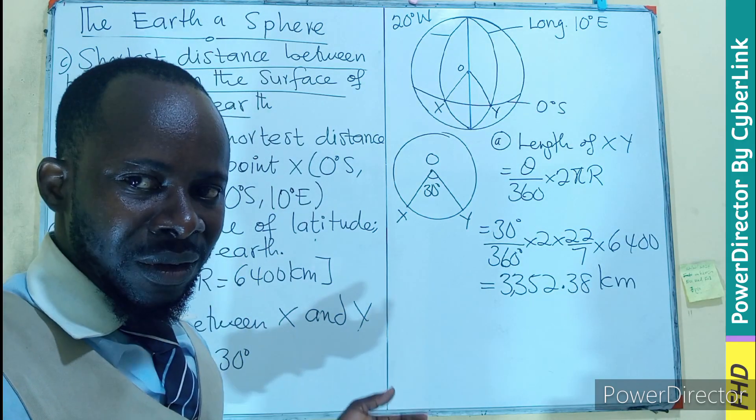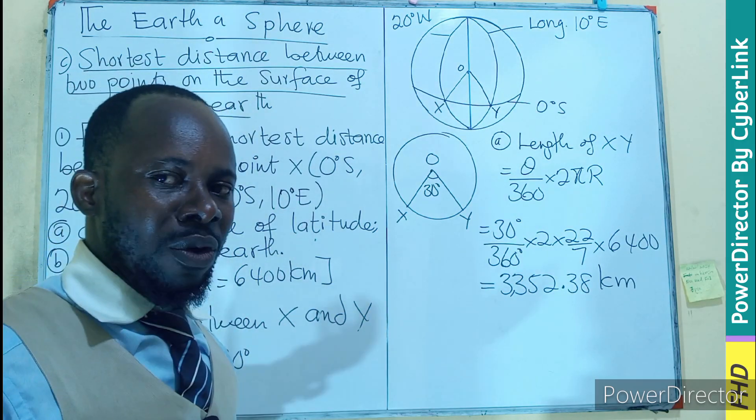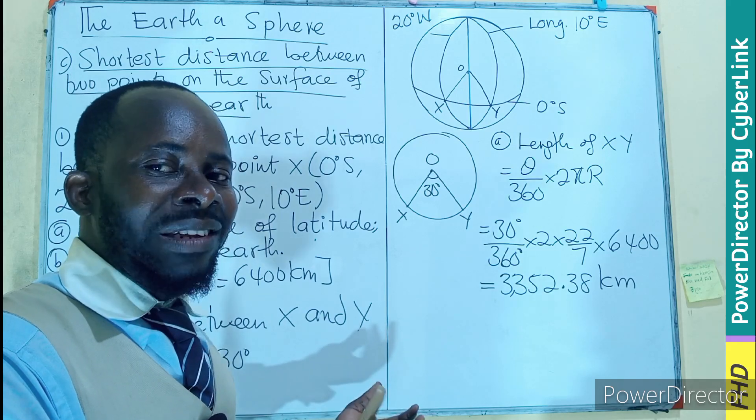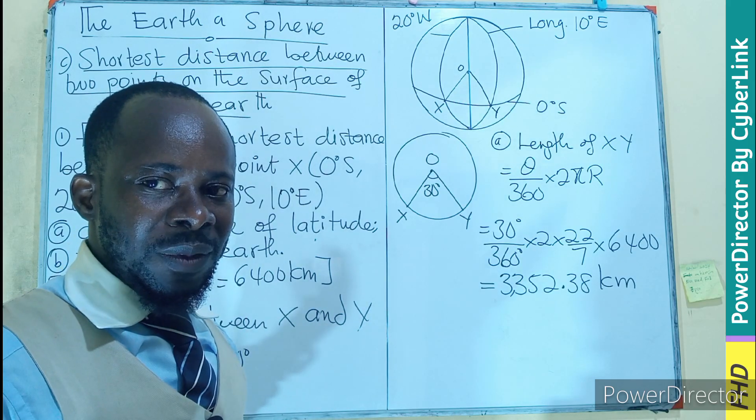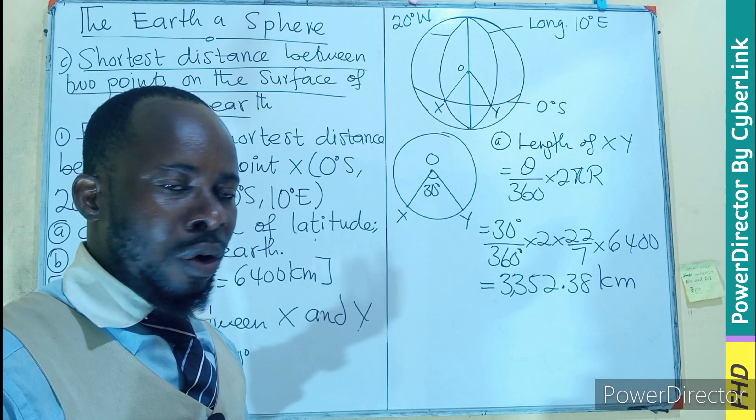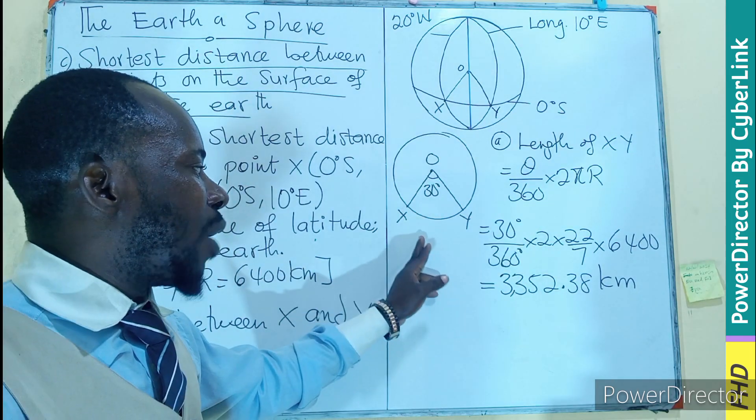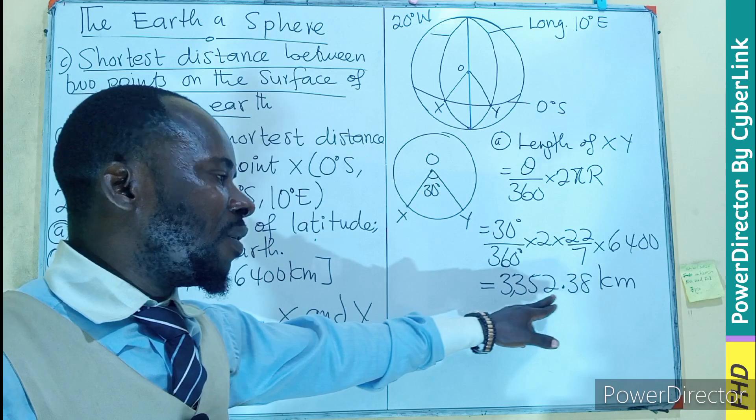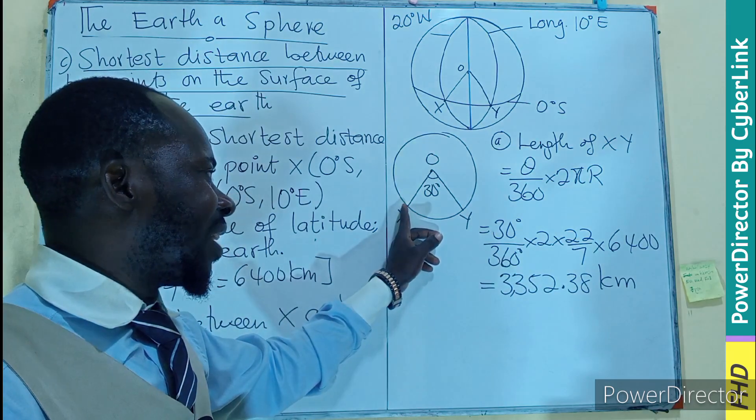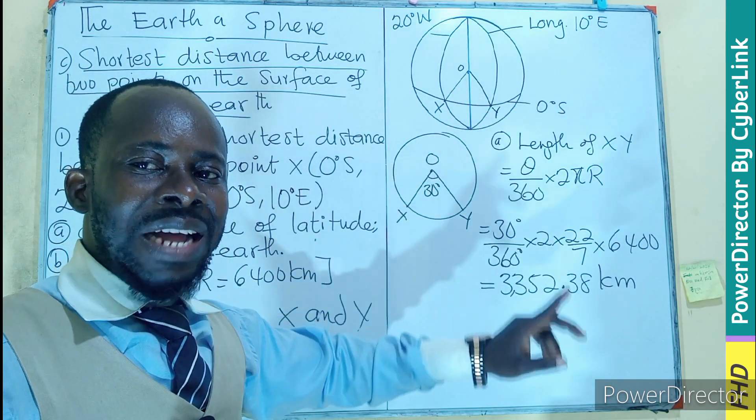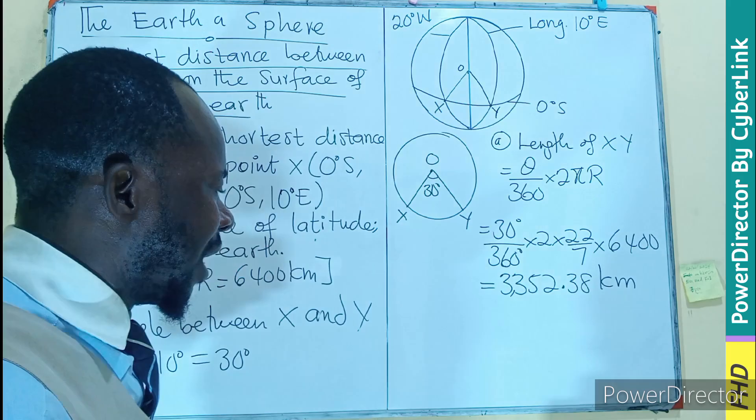So the distance along the latitude is 3352.38 kilometers. Remember, we talked about the importance of knowing the Earth as a sphere to find the distance between two points by sailors, pilots, and all people who make use of compasses.